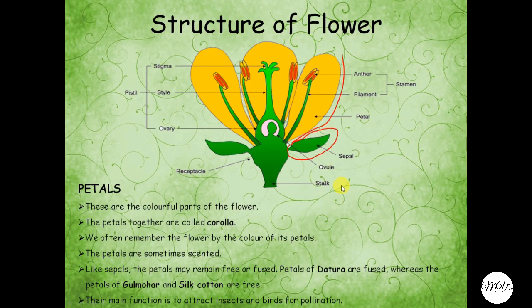The petals are sometimes scented, as in rose and jasmine, the petals are scented. Like sepals, the petals may remain free or fused. Petals of datura are fused whereas the petals of gulmoha and silk cotton are free. The main function of the petals is to attract insects and birds for pollination.